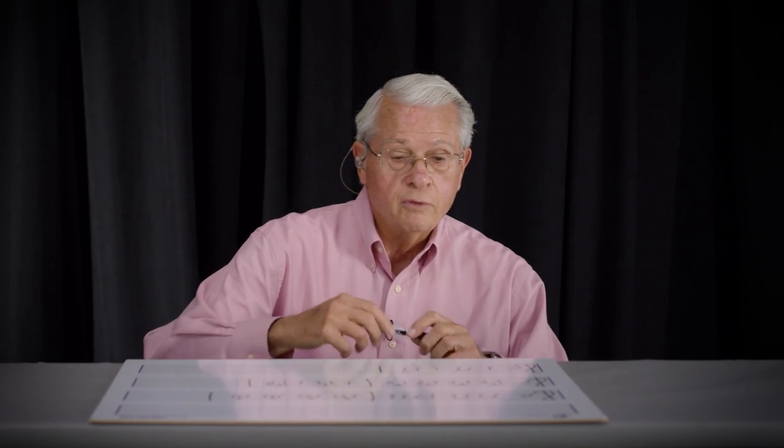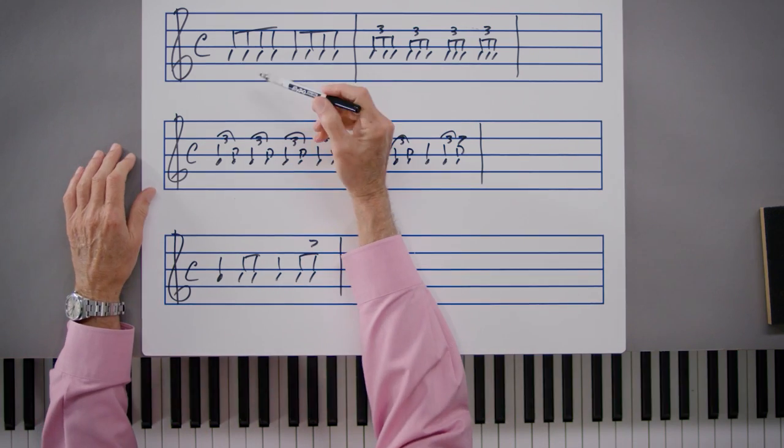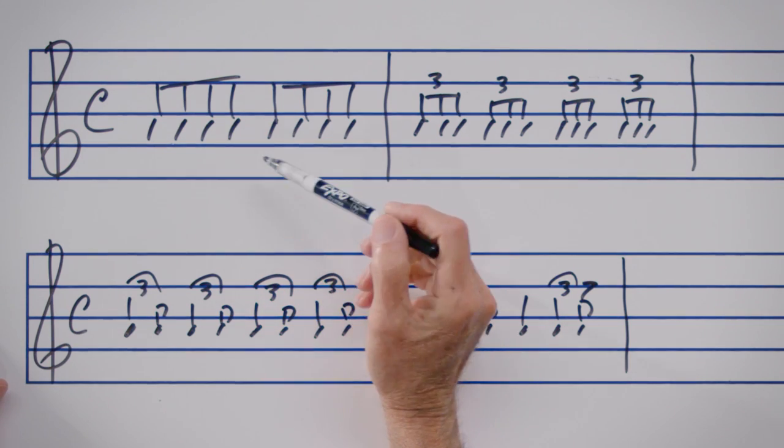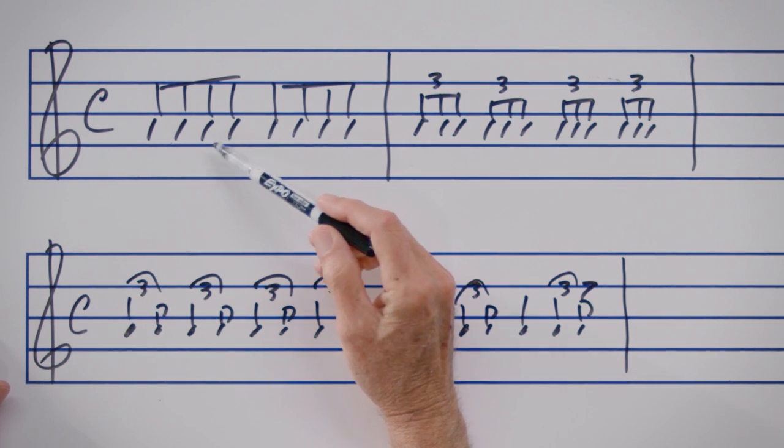Our first lesson is dealing with the swing eighth note. Ordinarily, when we think of eighth notes, we think of the equal division of the pulse into two. As demonstrated here, if we had written eighth notes in four-four, we would count them one and two and three and four and, which would be the equal division of each beat into two parts.